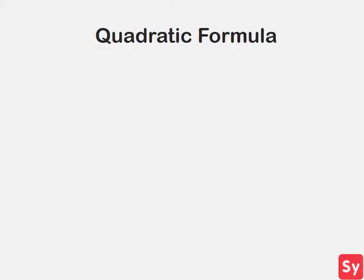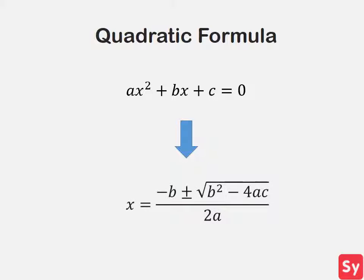The quadratic formula is very important and easy to use. It lets us know what the values of x are. It takes the quadratic equation and turns it into the quadratic formula, which states x is equal to negative b plus or minus the square root of b squared minus 4ac over 2a. All you have to do is plug in values for a, b, and c, and you get your solutions for x.